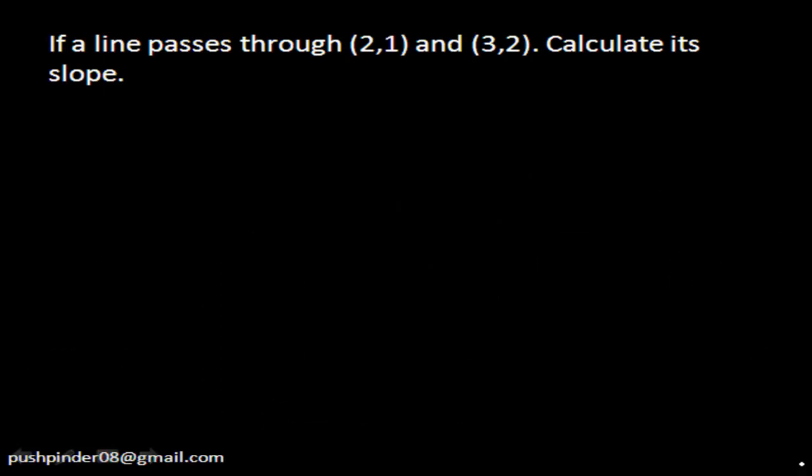Let's solve a simple question. The line passes through these two points and we have to calculate its slope. The slope can be easily calculated as 2 minus 1 divided by 3 minus 2. That is y2 minus y1 divided by x2 minus x1.